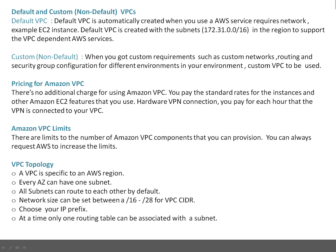The number of subnets created by default matches the number of availability zones in that region. With a Custom or Non-Default VPC, you use it when you have custom requirements — such as not wanting to use the default network 172.31.0.0/16, or not wanting to stick with default Amazon routing, because in default Amazon routing all subnets are allowed to access the internet, which you typically don't want in a production setup.